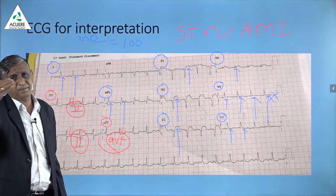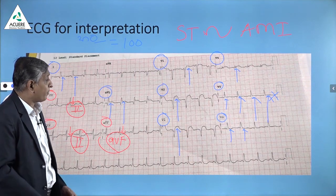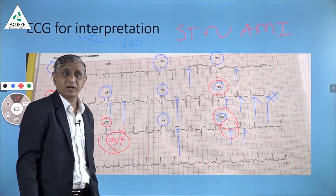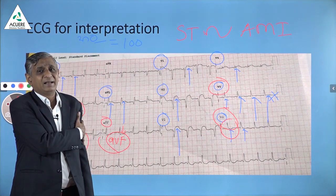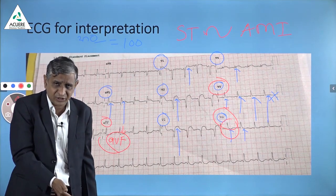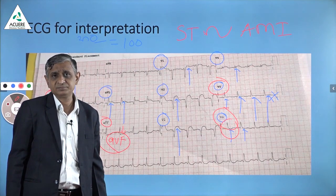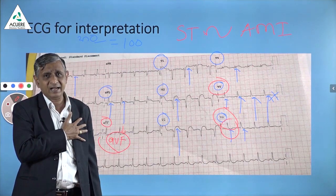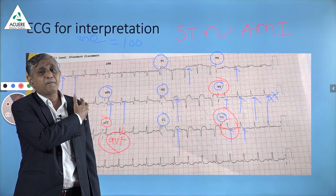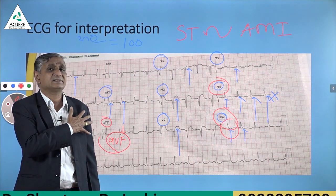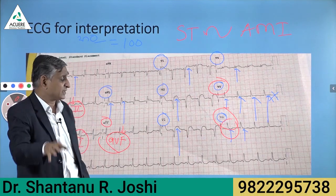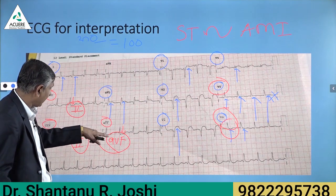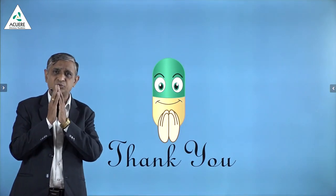If you repeat this ECG after 15 minutes or half an hour, you may also get ST elevation in V5 and V6, and that will become anterior-lateral infarction with reciprocal changes in the inferior leads. The diagnosis is clear: the anterior and upper lateral portion of the heart is affected — acute myocardial infarction — supported by ST depression in leads 2, 3, and AVF. Thank you dear students.